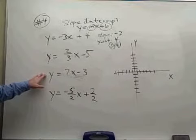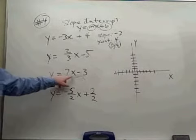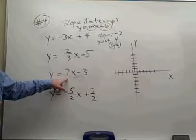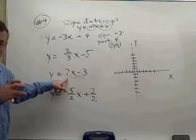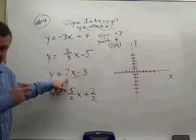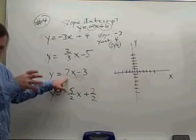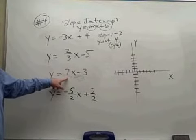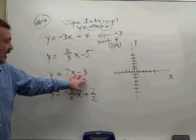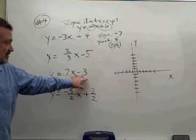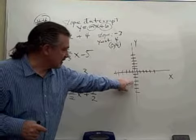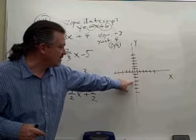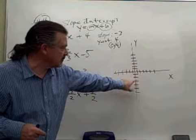Another equation in slope-intercept form, so the coefficient of x is the slope — the slope would be seven. Notice it's just the coefficient, not the whole term 7x; just the coefficient is the slope, seven. The y-intercept would be negative three, so the line crosses the y-axis down here at that point.